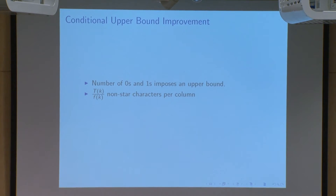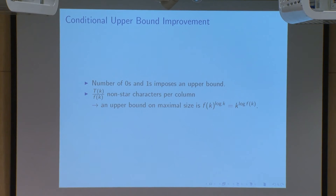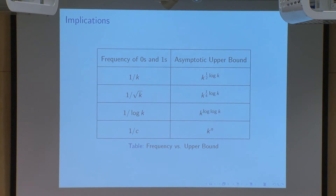Additionally, I've done some work on a conditional upper bound. I've been able to demonstrate that the number of zeros and ones in a maximal size tournament code determines an upper bound on that tournament code's size. If I define f(k) to be the inverse frequency of the zeros and ones in the tournament code, then we can show by some algebra that the maximal size of a tournament code is upper bounded by k to the log of f(k). In particular, if the frequency of zeros and ones is one over k to some power, this gives an asymptotic bound of k to some constant times log base two of k. However, if we can show that the number of zeros and ones is always at least some fraction of the total characters, then we can achieve a polynomial upper bound on tournament code maximal size.